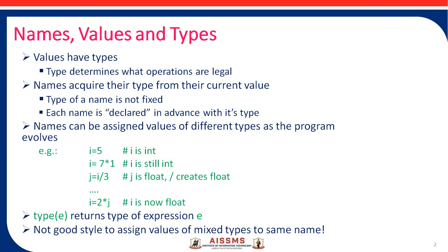Before this, we discussed two kinds of values: integer values and floating point numbers. These values are stored in variables, which are called names. Values have types — we already know that — and we can perform operations on these values. Names acquire their type from the current value. We assign values to a particular name, and the type is defined by what kind of value it holds. The type is not fixed.